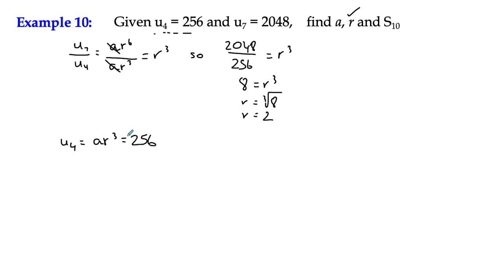We know that r cubed is 8 already, so we can say that a multiplied by 8 is 256. If we divide both sides by 8, we end up with a equals 256 divided by 8, which is 32.